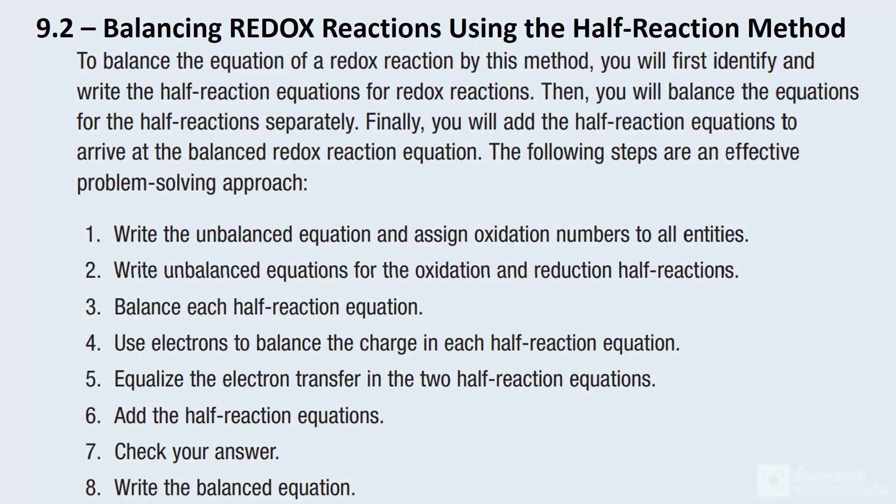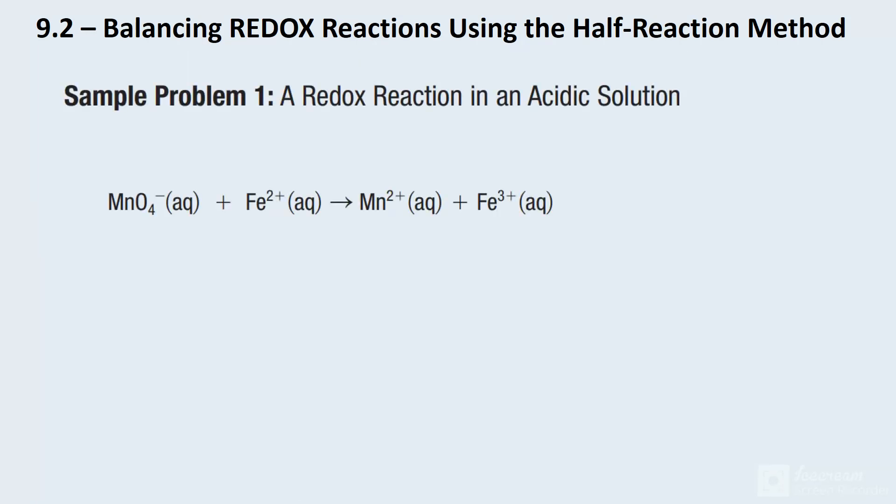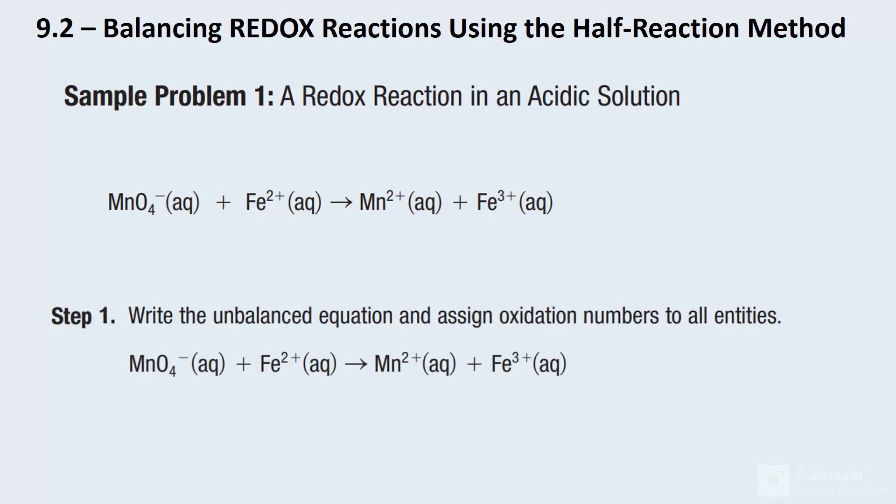So let's take a look at an example. Here we go. Here's our example. The first step is to write out the unbalanced equation and we need to assign our oxidation states. So it doesn't really matter where we start. It's probably a decent idea to start with the oxygen though because it's minus two. So our oxidation state, we've got a total of minus eight there.